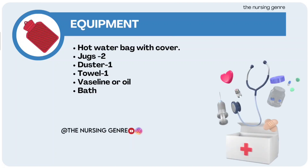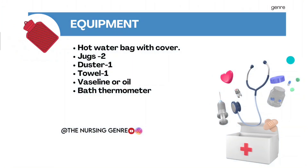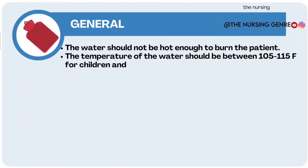Equipment required: one hot water bag with cover, two jugs, duster, towel, vaseline, and a bath thermometer. The bath thermometer is used to measure the water temperature.